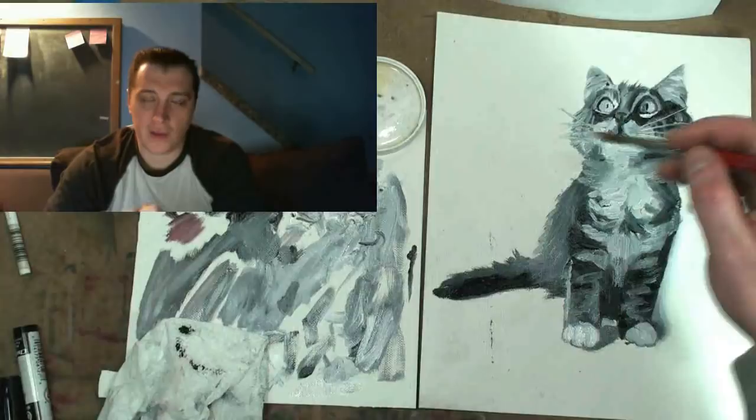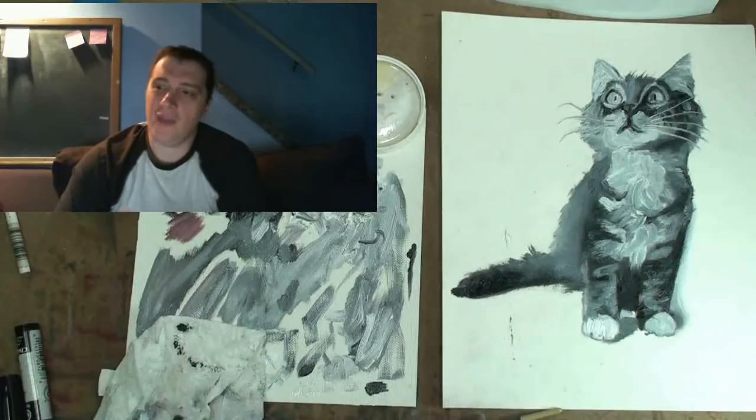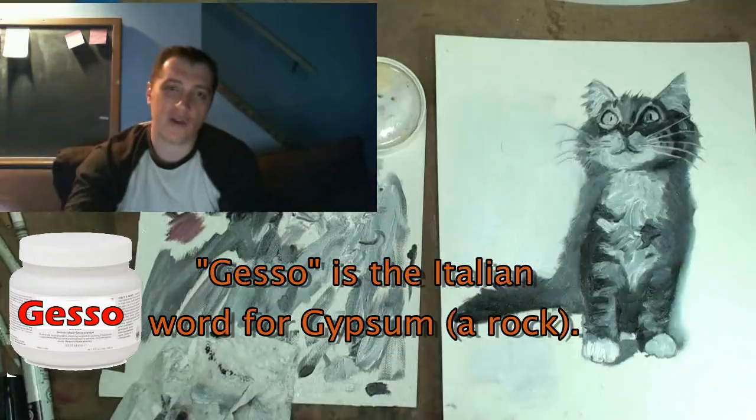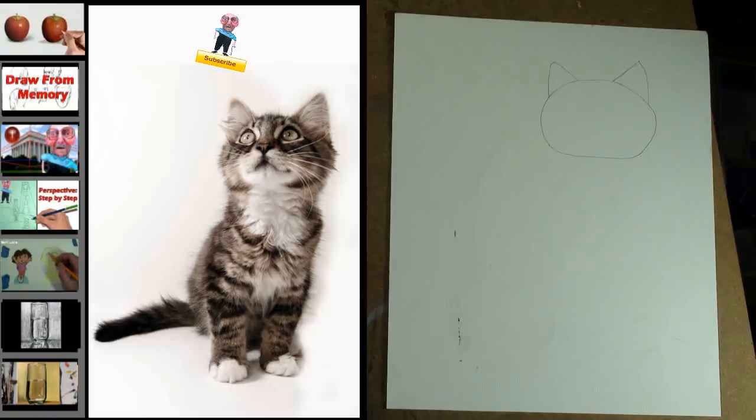The only thing that you'll need are paintbrushes, paint, and a surface to work on. If you don't have canvas, all you need to do is buy something called gesso and put a layer of gesso over a piece of paper or cardboard. Let's begin.